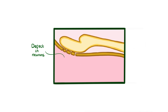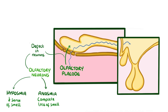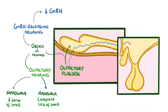In Kallmann syndrome, there's a defect in the migration of neurons coming out of the olfactory placodes. That includes the olfactory neurons, which can result in hyposmia — a reduced sense of smell — or anosmia, which is a complete loss of smell. It also includes gonadotropin-releasing hormone neurons, which results in a decrease in gonadotropin-releasing hormone, and that leads to low levels of gonadotropin hormones — luteinising and follicle-stimulating hormone — and low levels of gonadal function.